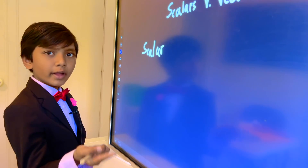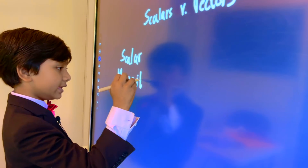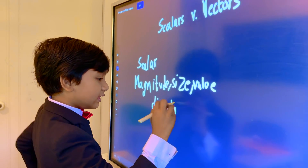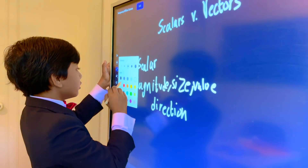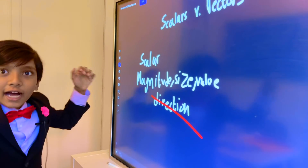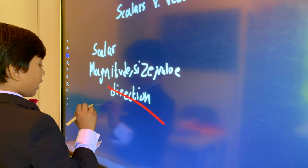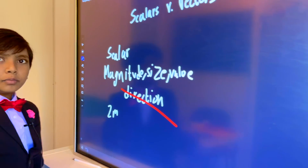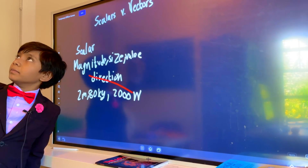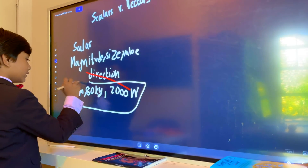So what's a scalar? One-dimensional information. It has a magnitude — it has size, value. Scalars do not have direction. So what are some examples of size and value? Let's say I'm traveling 2 meters from my home, or 1,000 watts running into that light bulb up there. These are all examples of scalars.